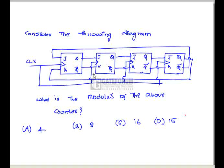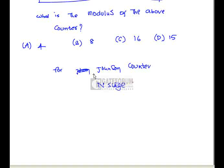Consider the following counter diagram. What is the modulus of the counter? Looking at the diagram, it is a twisted ring counter, or Johnson counter, having four stages. For a Johnson counter with N stages, the modulus is 2N. Here it has four stages, so the modulus is 8. Option B is correct.